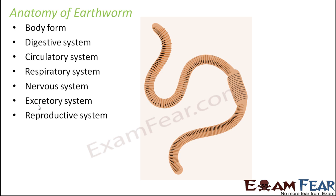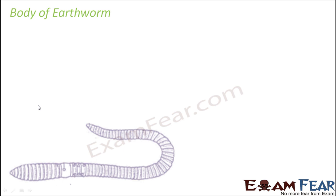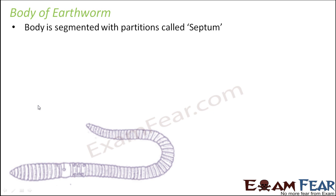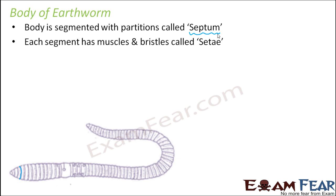Starting with the body form of the earthworm: the body is segmented, and what separates one segment from another is a partition or wall between any two segments, known as septa. Each segment has muscles and bristles called setae. They are muscular in nature because they are capable of contraction and elongation.